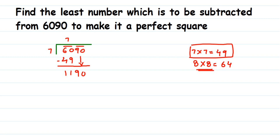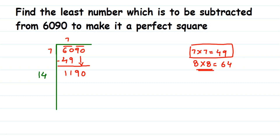Now this is a really important step. For the next divisor, you do not keep 7. Instead, you take double the quotient you got. The quotient so far is 7, and double of 7 is 14. So the new working divisor starts as 14. But it's not yet complete — we need to find a single digit to append to 14.